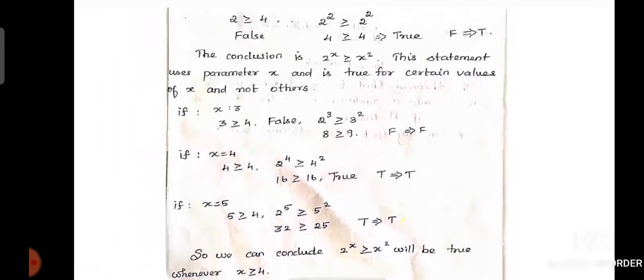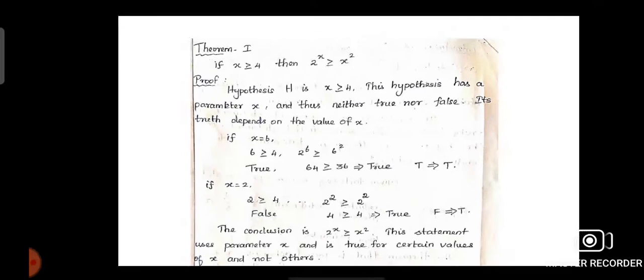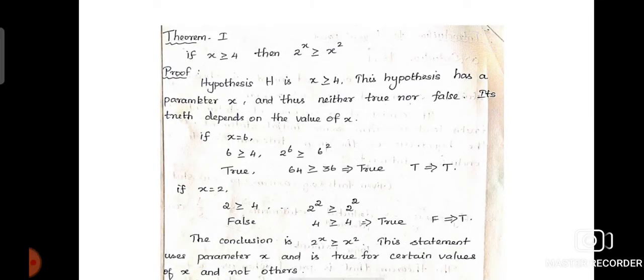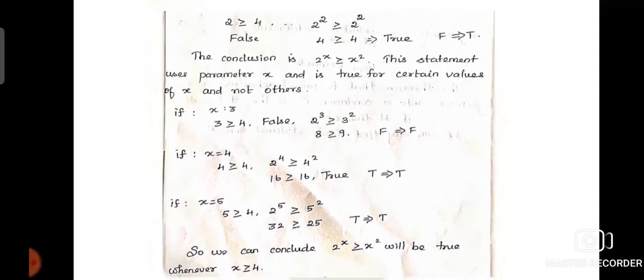We can apply more values. If x = 3 we get false → false. If x = 4 we get true → true. If x = 5 we get true → true. So we can conclude that our theorem is true whenever x ≥ 4. For all values less than 4 the theorem is not true. This is one example of a deductive proof theorem.